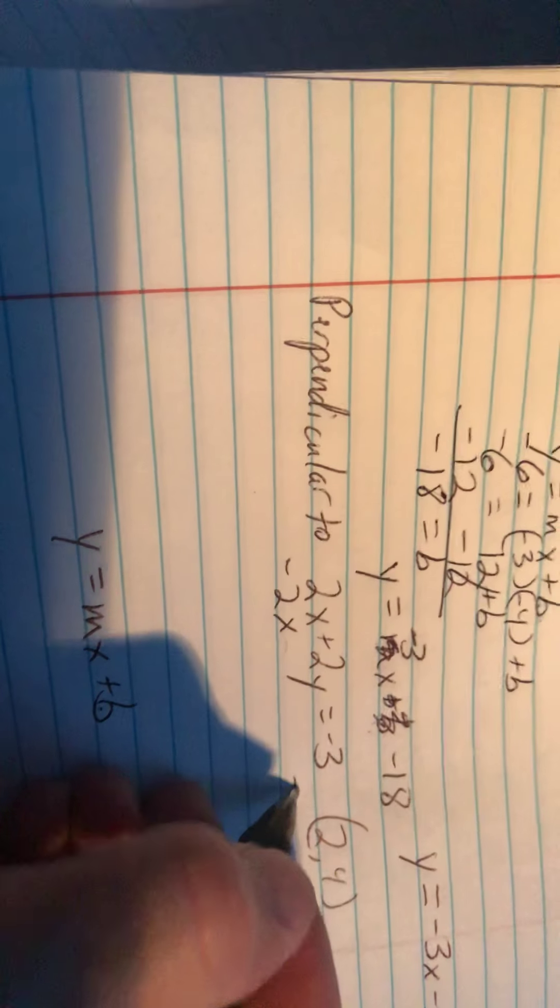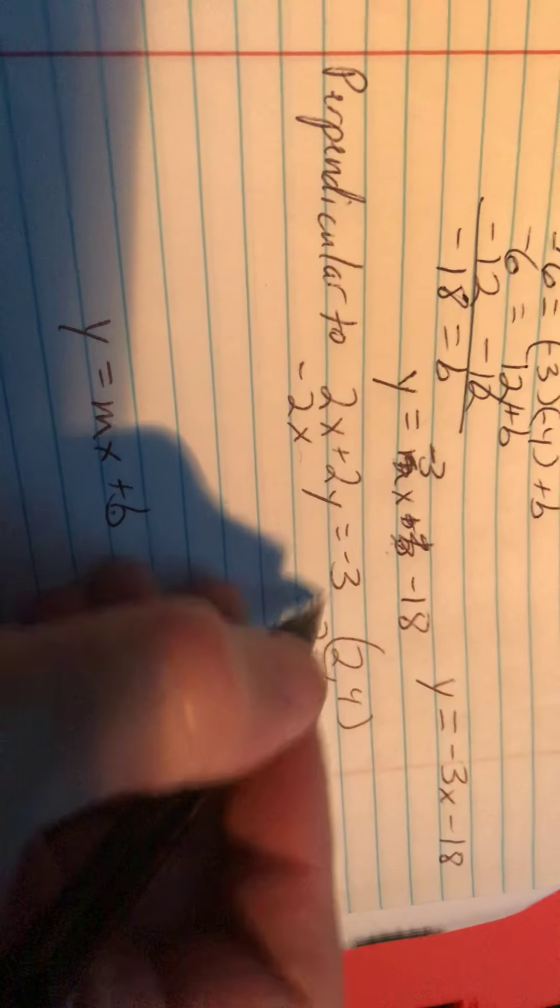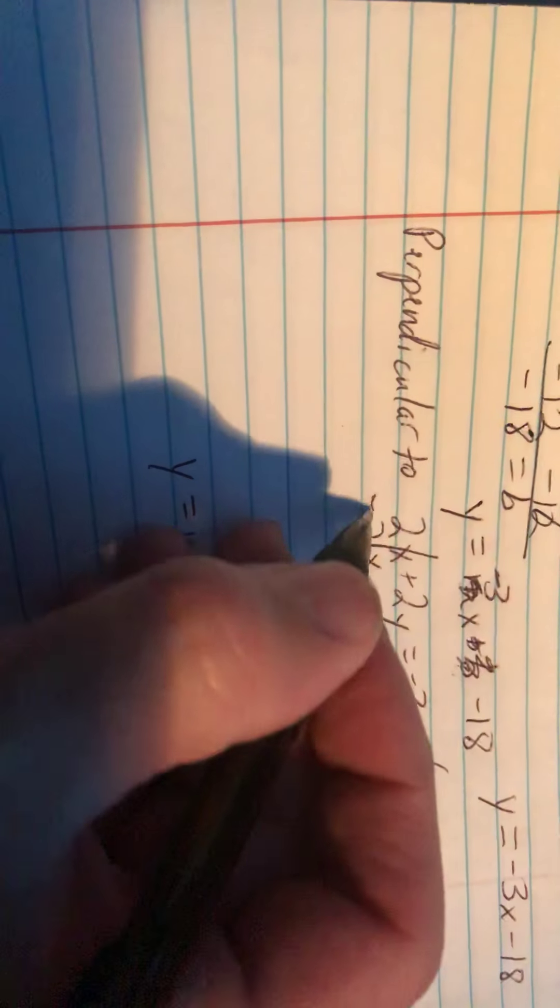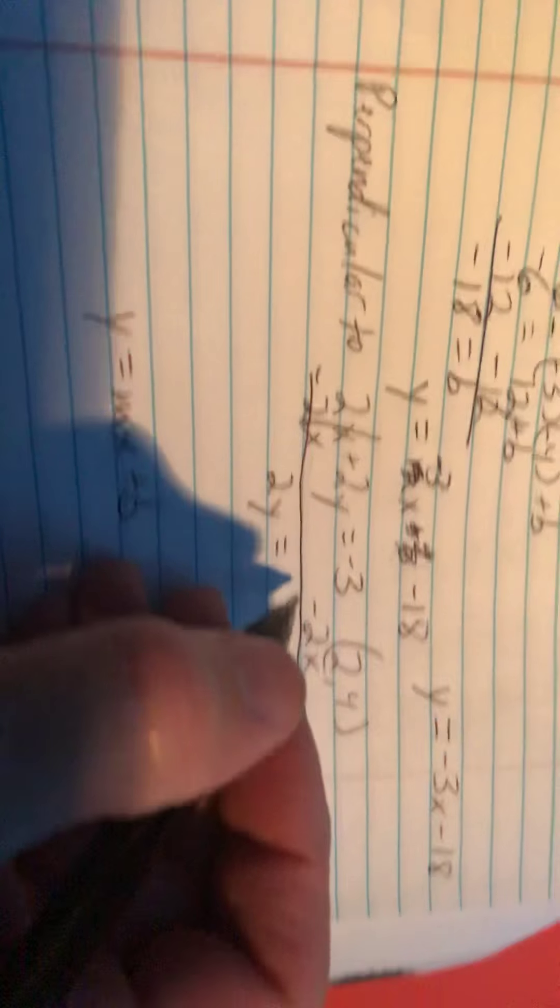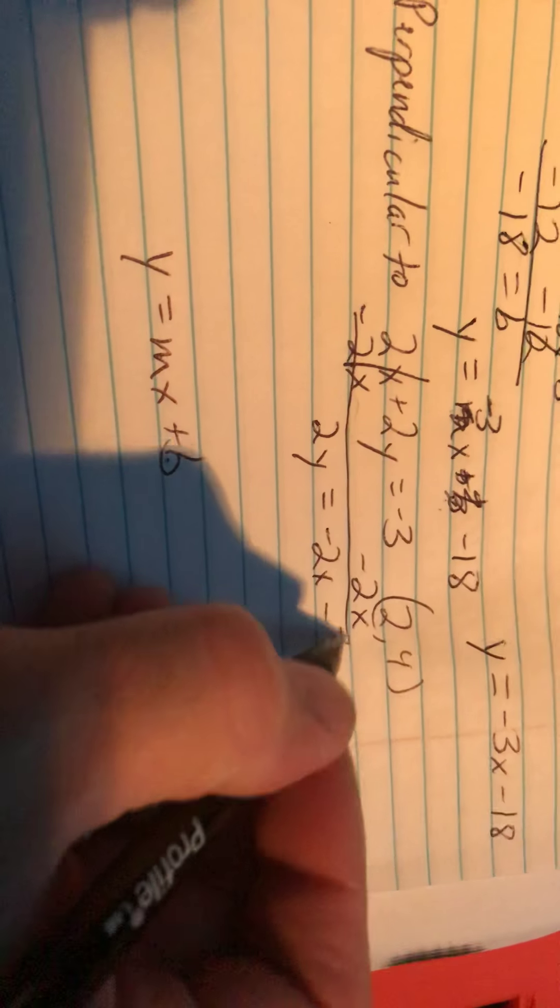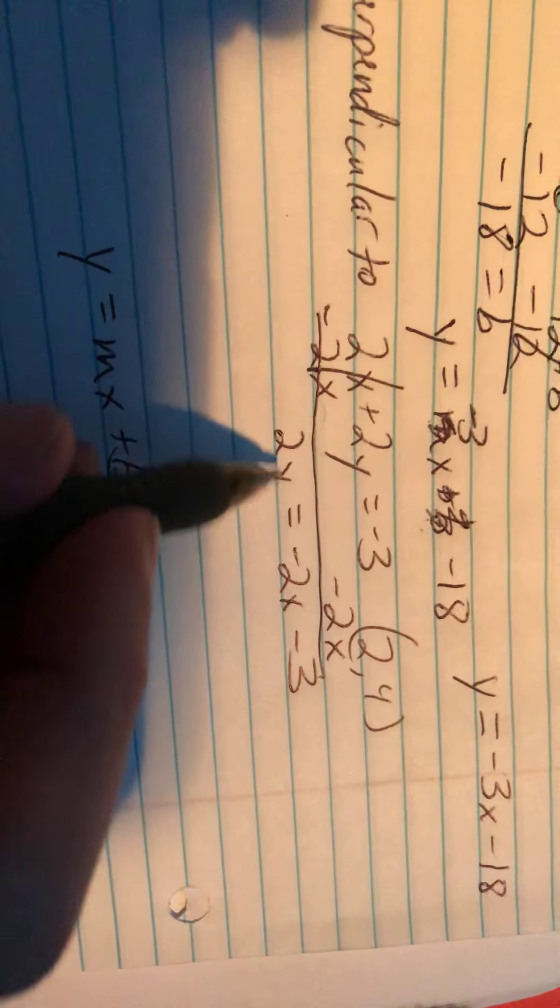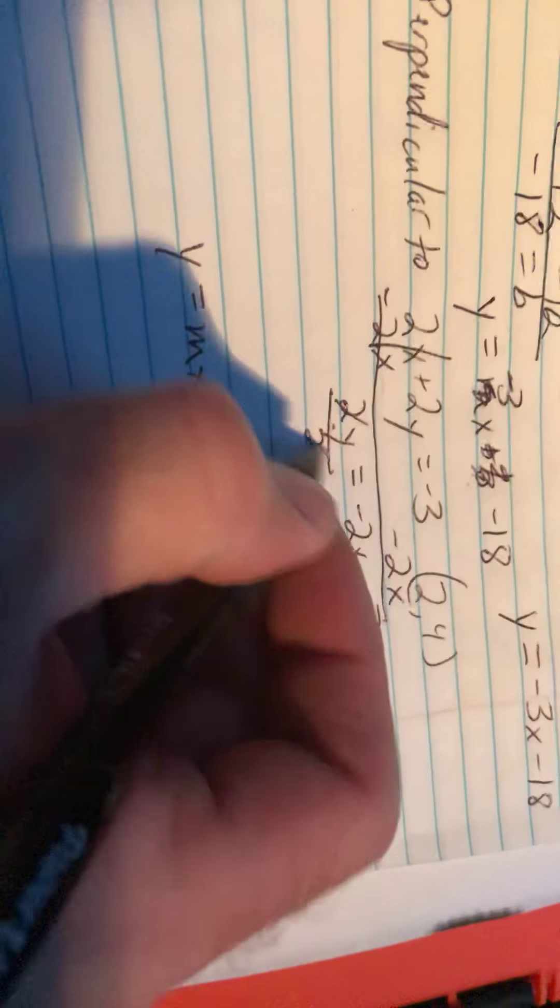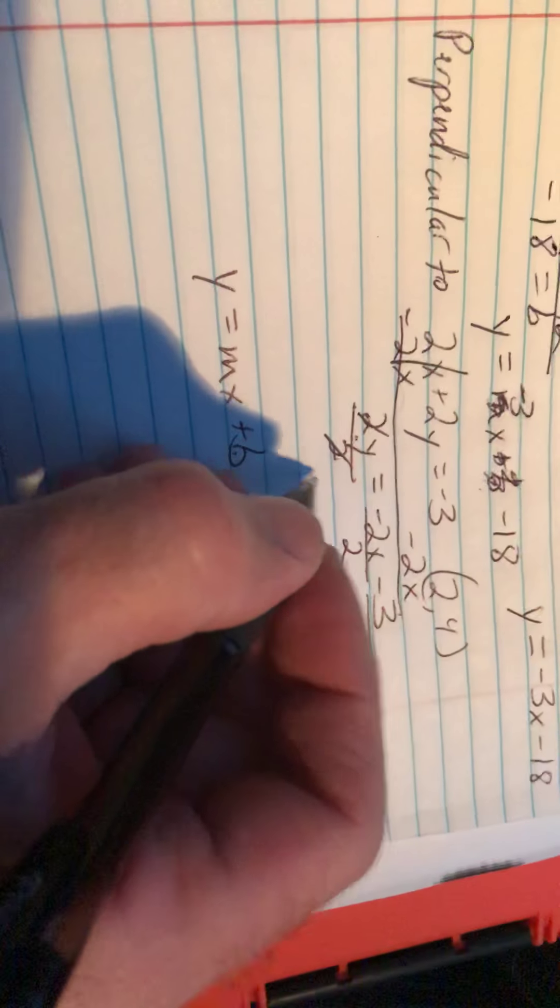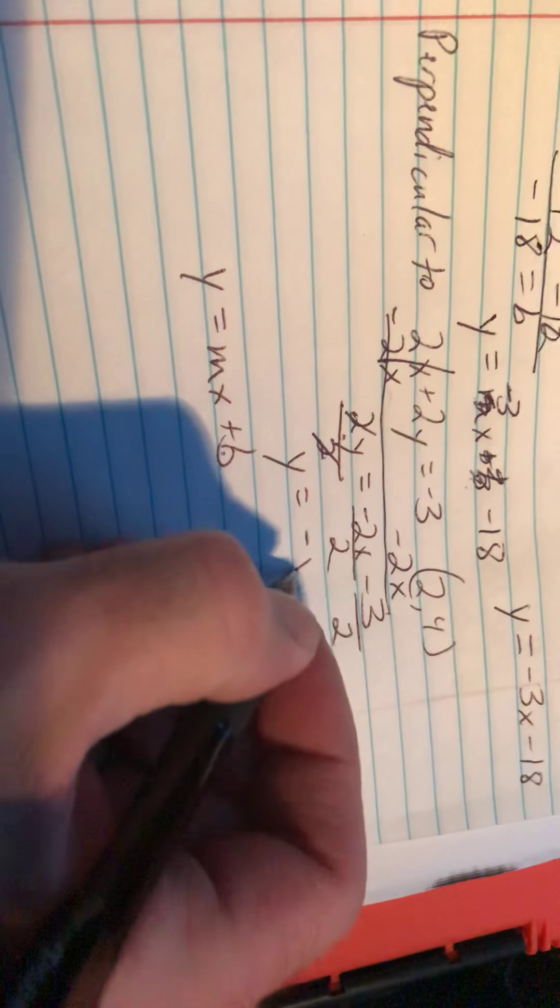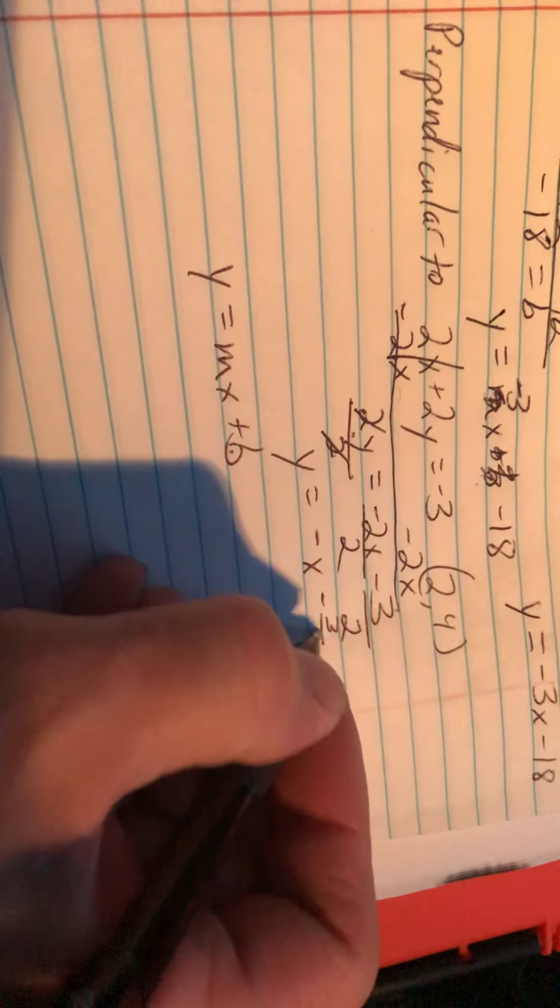So to solve for y, we subtract 2x. I'm just going to go ahead and switch these two around. That cancels. 2y equals, when I switch them around, negative 2x minus 3. Then to get y by itself, we divide everything by 2. And we're going to get y equals negative x minus 3 over 2.